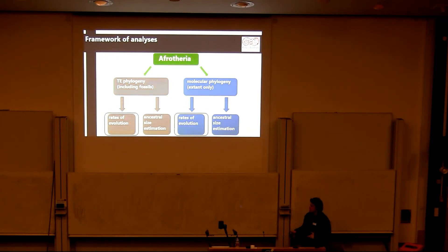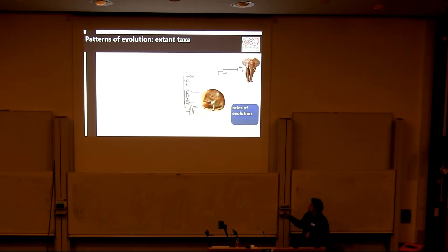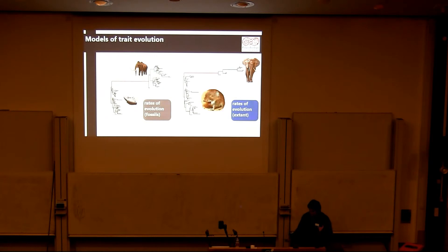The first thing we were interested in looking at was rates of evolution. When we just have extant species only, perhaps unsurprisingly, we get this huge burst of evolution leading to the larger body taxa, including the elephants — fitting what we'd expect, given a small ancestral size and small taxa elsewhere. When we incorporate fossils, basically nothing changes: we get the same result, on the same branch, to the same magnitude — a burst of evolution leading to this larger body clade.